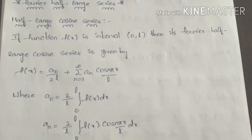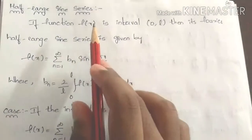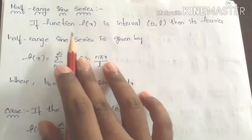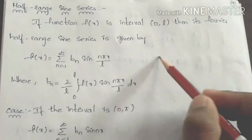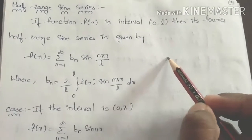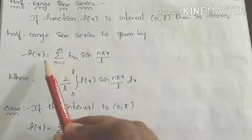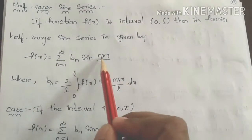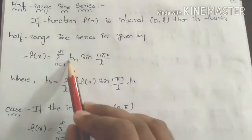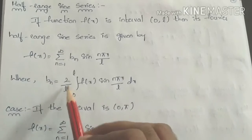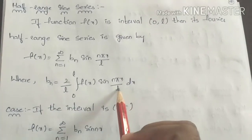Next, half range sine series formulas. For the half range sine series, if the interval is 0 to l, f of x is equal to summation n equals to 1 to infinity, bn sin(n pi x by l). The constant bn formula is bn equals to 2 by l, integration 0 to l, f of x sin(n pi x by l) dx.